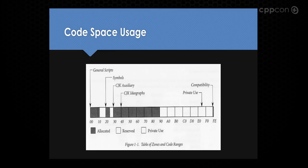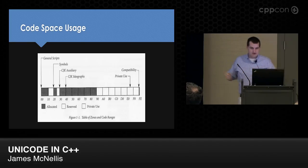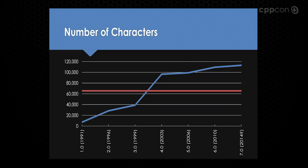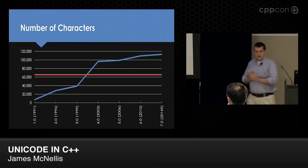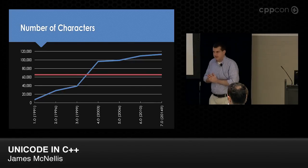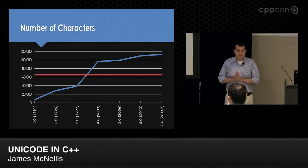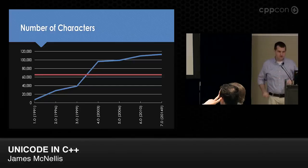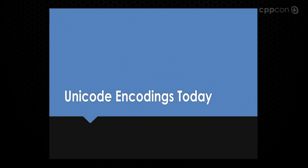When Unicode 1.0 was published, about half the code space was used with about half left for future characters. The Unicode 1.0 introduction stated: 'With over 30,000 unallocated character positions, the Unicode character encoding provides sufficient space for foreseeable future expansion.' It might as well have said 65,000 characters ought to be enough for anybody. This graph shows successive Unicode versions on the x-axis; the blue line shows distinct characters per revision, and the red line shows the growth in representable values using 16 bits. The 16-bit integers are not keeping up — this is a problem.